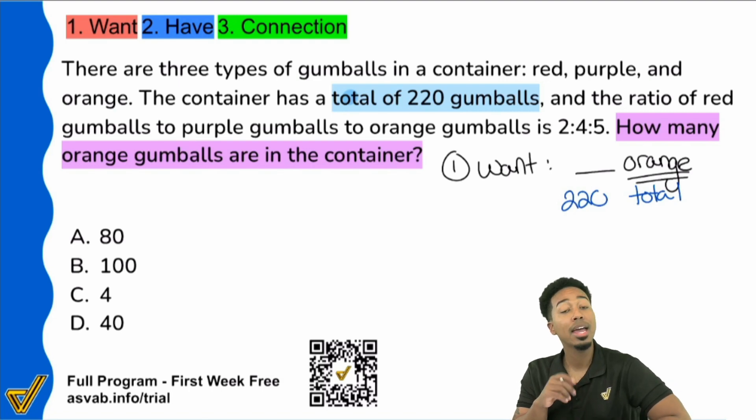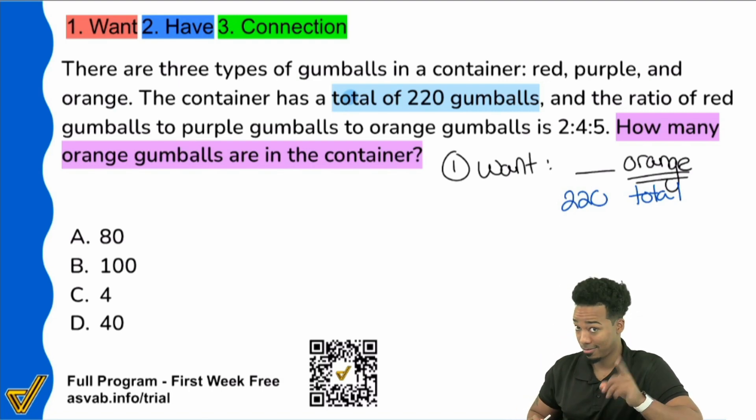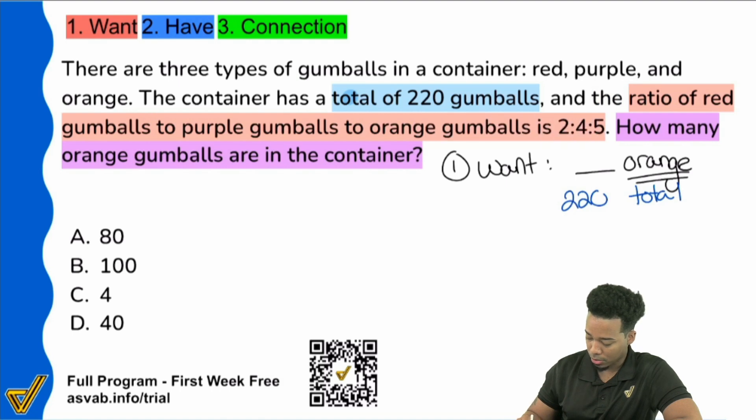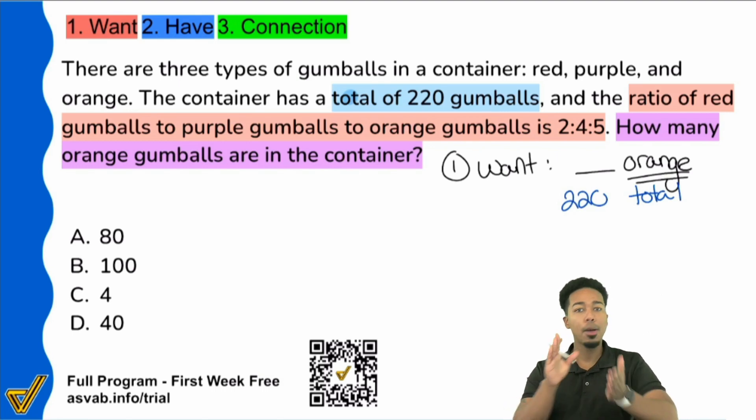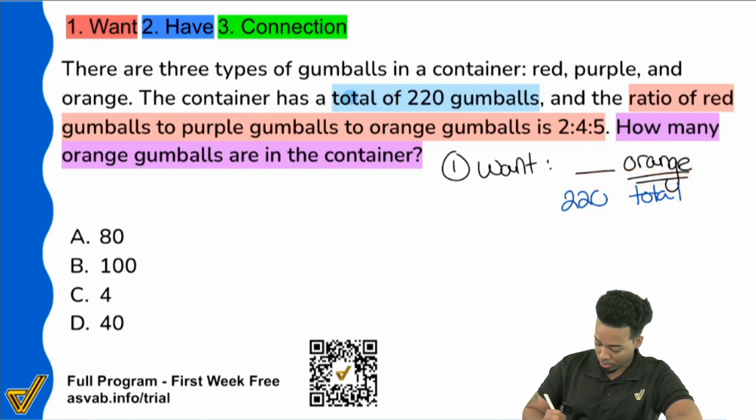And then notice in the next part of this sentence, notice here that we're told that the ratio of red gumballs to purple gumballs to orange gumballs is two to four to five. What does that mean? Well, before I even interact with that information, I saw the word ratio. And given that we have the word ratio and we're looking to solve for a piece, proportions. And any proportion problem, we would always set up our proportion based on the question right here. We're looking for orange and we have 220 total. So what I'm going to do is I'm going to create a proportion right over here and I'm going to say X because it's going to represent orange, and then we're going to have 220 and that's going to represent the total.